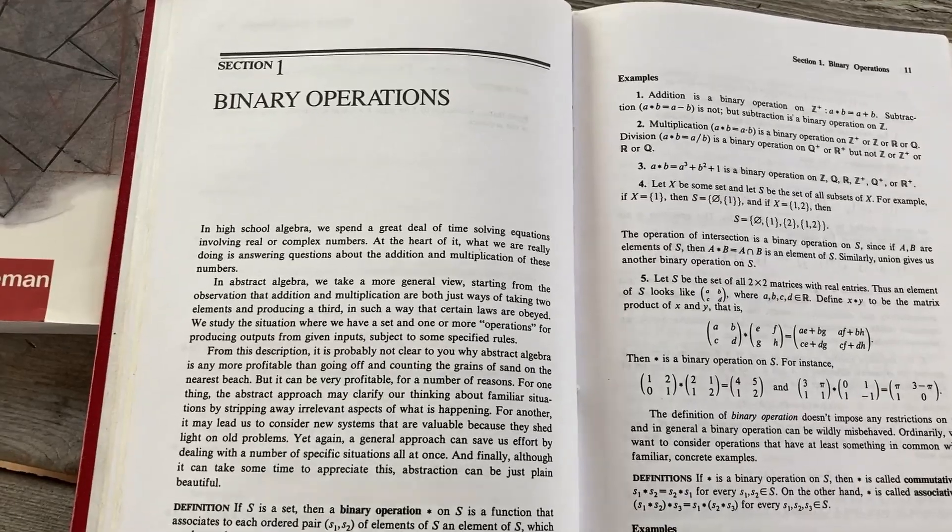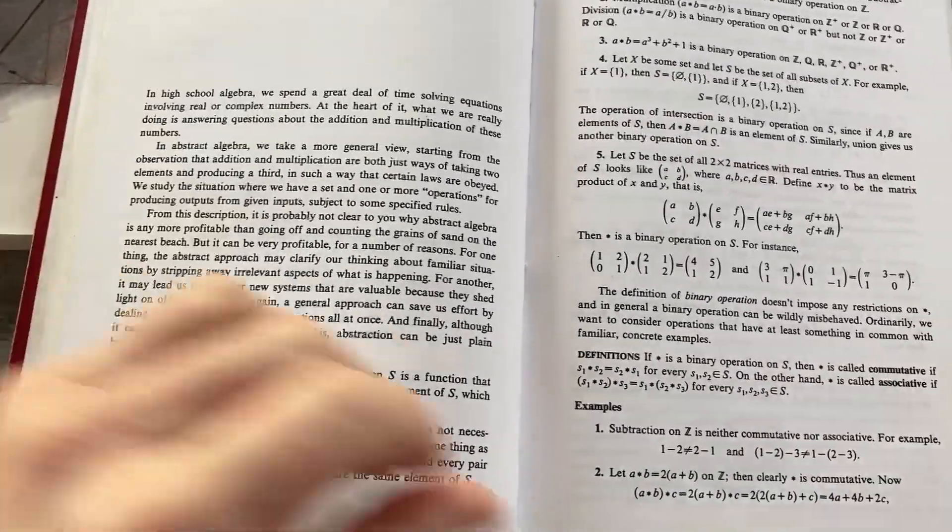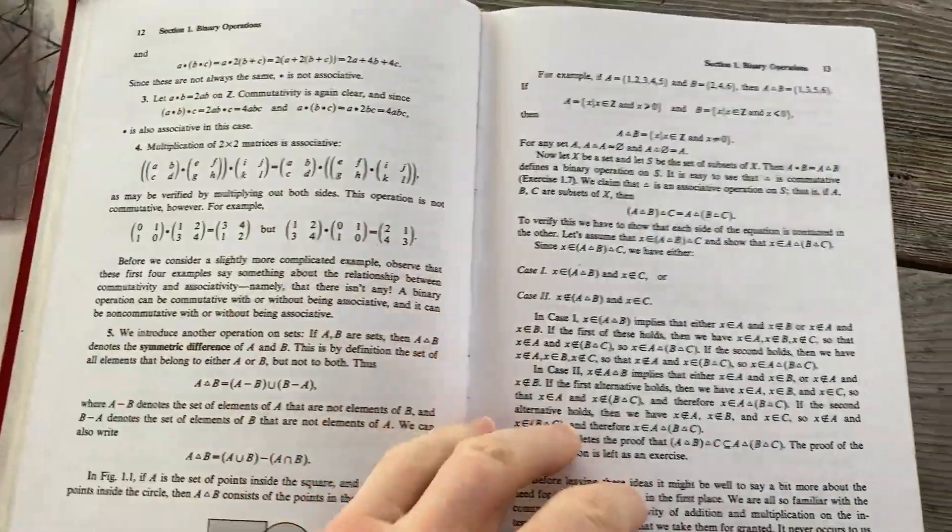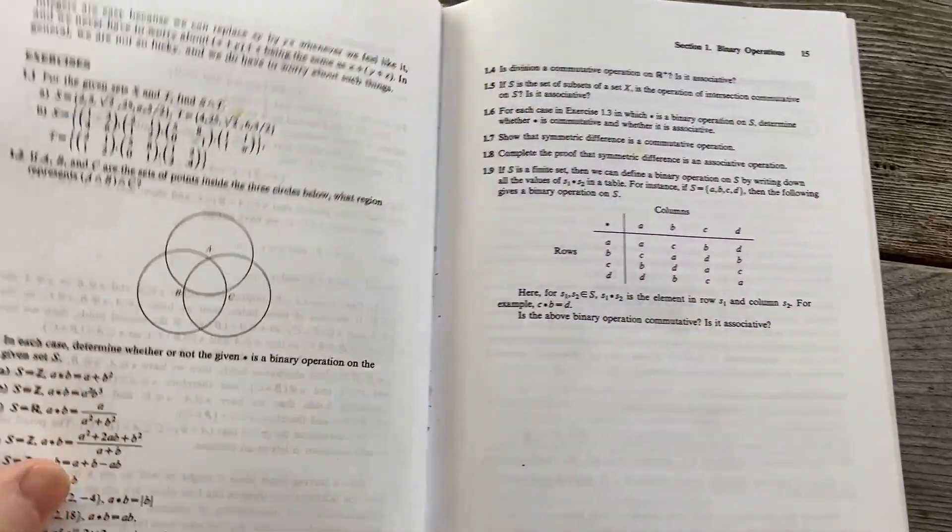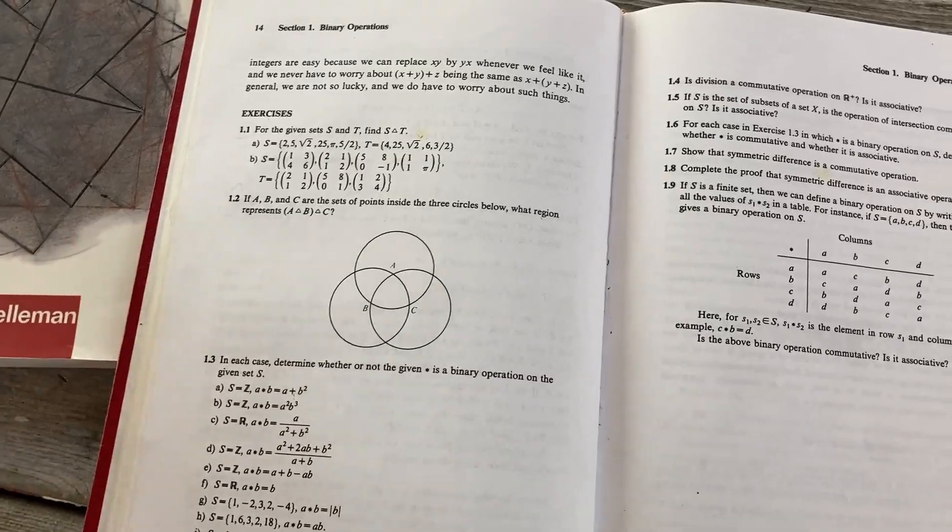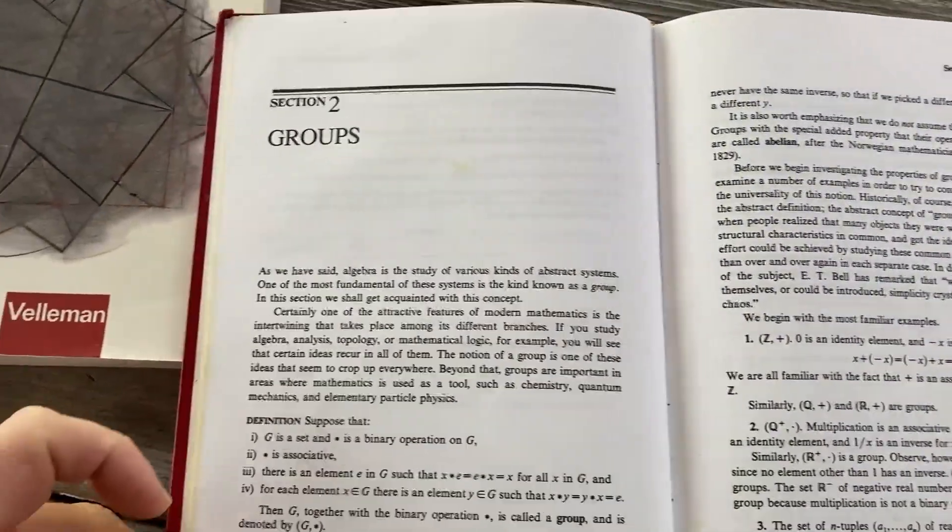Section one is on binary operations. We're not even to groups yet. He just talks about binary operations, and there's an entire section devoted to it. So you can see why this is a beginner book. If you compare this to other more advanced books, for example, Dummit and Foote, they're going to blow through all of this content in very few pages. Whereas with a book like Saracino's, it takes its time.